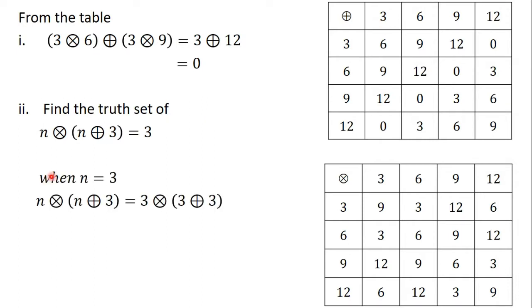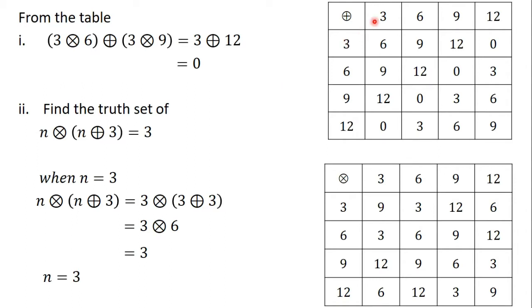We will begin with the first one, which is 3. When n equals 3, n times (n plus 3) becomes 3 times (3 plus 3). We find 3 plus 3 from the addition table. From the addition table, 3 plus 3 is 6. So this becomes 3 times 6. From the multiplication table, 3 times 6 gives us 3. So n equals 3 satisfies this equation because substituting n equals 3 gives a final answer of 3.